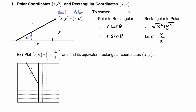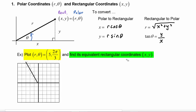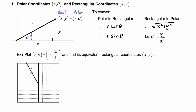Let's take a look at this first example, where we have to plot the point in polar coordinates — that's what r theta is telling you — of five comma two pi over three, and then find its equivalent rectangular coordinates (x, y). The polar coordinates tell you to turn through an angle of two pi over three, which would be here.